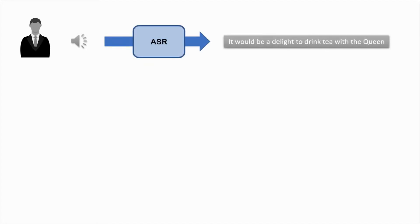Let's look at an example. Here we have a person and they speak: "It would be a delight to drink tea with the queen." The ASR system is only concerned about the text and is not influenced by the speed, enunciation, pronunciation, and other discourse features.